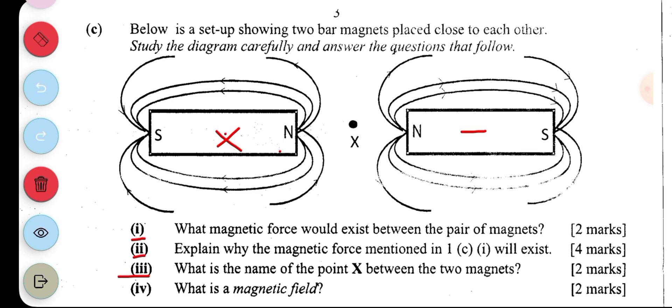Then part three, what is the name of the point X between the two magnets? Now before I answer this question, this north and north, it also means when south and south is also brought close, there will be a repulsive force. So when it's north and south, that's when attractive force. Then part three is this: what's the name of the point X? That point is called neutral point.